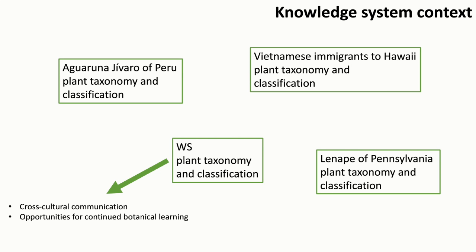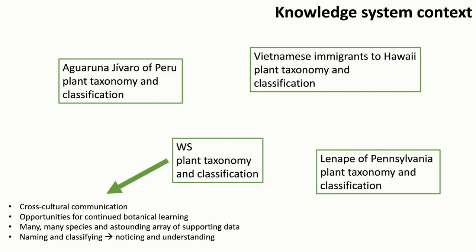Second, Latin names and the Western classification system will show up in your future studies, in seed catalogs, at botanical gardens, basically all over. So knowing a little bit about them will open many opportunities, academic and otherwise, for continued botanical learning. And third, it is jaw-dropping to consider how many species from around the world are recognized by Western science, as well as the astounding array of data supporting the current classification system. And last, learning a system that includes the plants wherever you are will undoubtedly empower you to better notice the plants around you and understand how they fit into broader ethnobiological contexts.